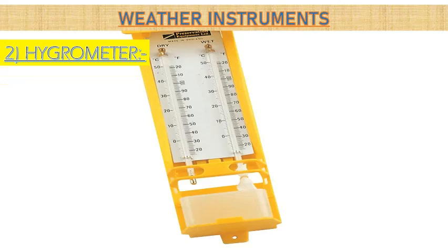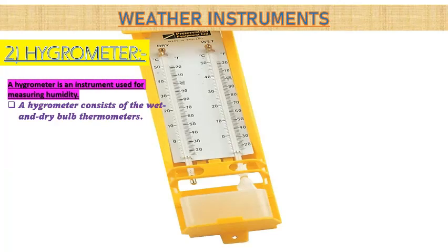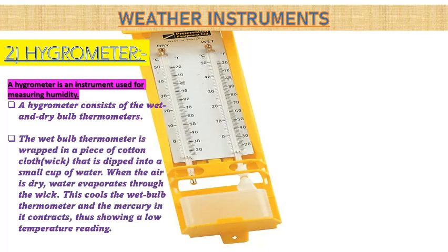Now let's learn about the hygrometer. The instrument used for measuring humidity is called a hygrometer. A hygrometer consists of wet and dry bulb thermometers. The wet bulb thermometer is wrapped in a piece of cotton cloth or wick that is dipped into a small cup of water.